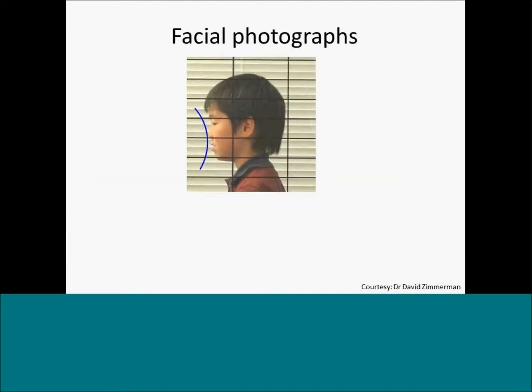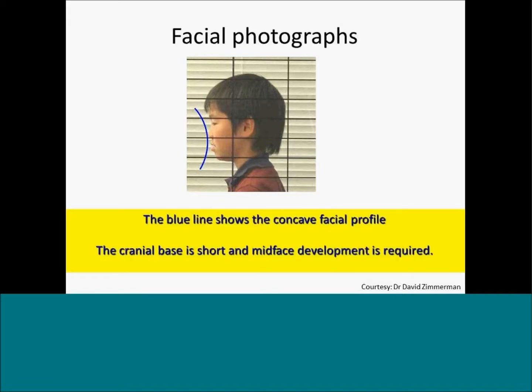We also see asymmetry of the upper lip. Looking at the face from the side view, this face has a concave facial profile — it could be convex, straight, or prognathic, but in this case it's concave. The reason behind that concavity is that the anterior part of the cranial base is likely short. Therefore, the midface needs to be further developed to produce a more pleasing and functional facial profile.